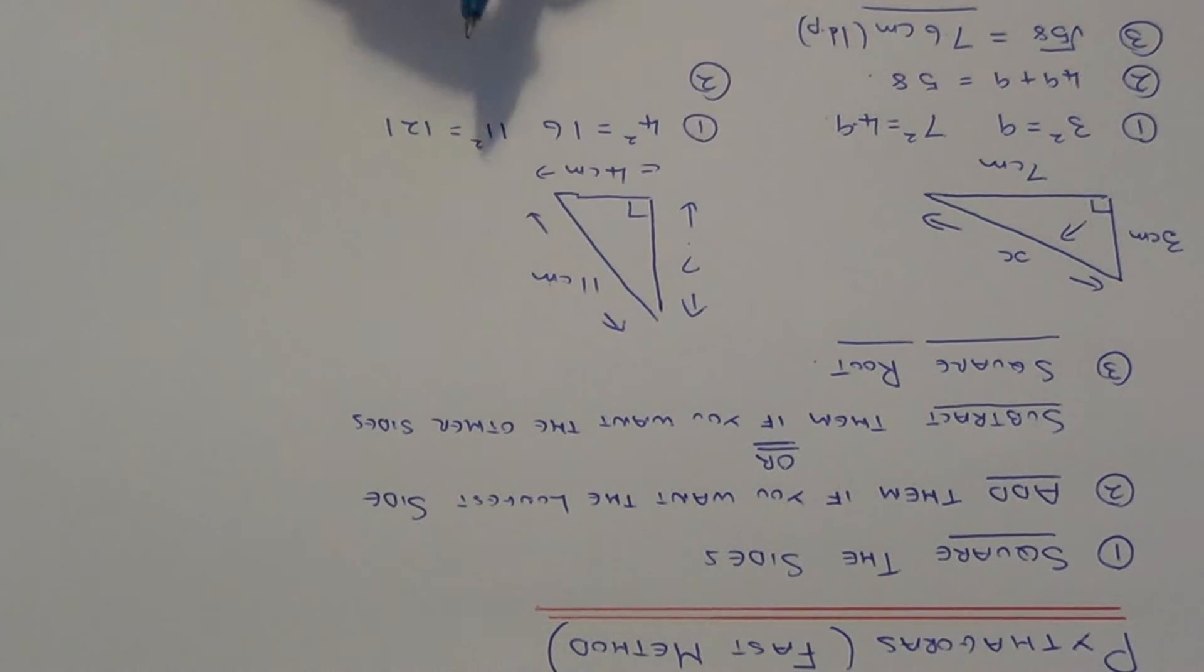Step two you need to be careful with. This time we are not finding the longest side. We are finding the other side. So we need to subtract these two squares. So we do a hundred and twenty-one minus sixteen.